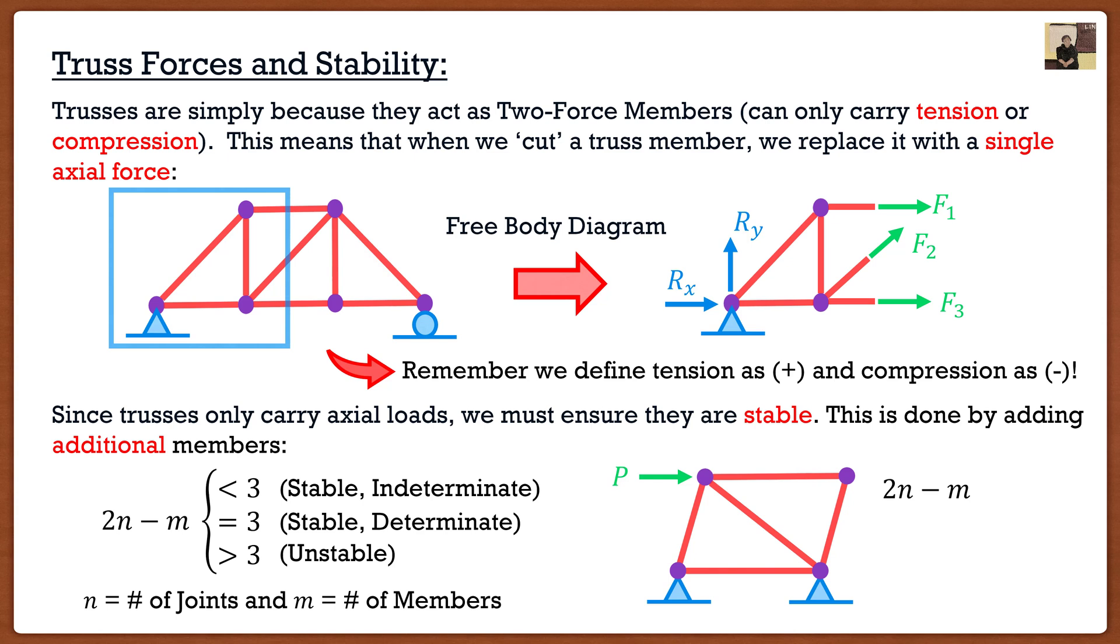If we look at 2n minus m, in this case, m went from 4 now to 5 because we added an additional member. From here, we get 3, which means that our truss is stable. And it is also determinate, meaning if I wanted to, I can solve this truss and all the forces using equilibrium.